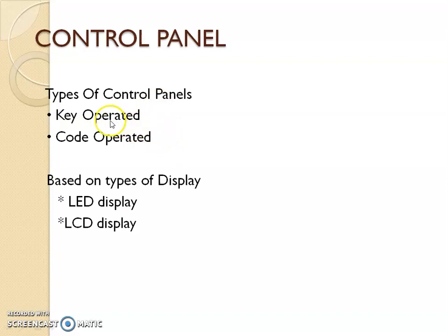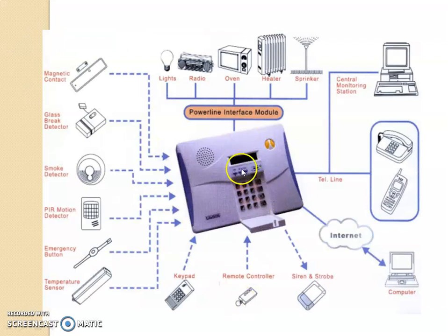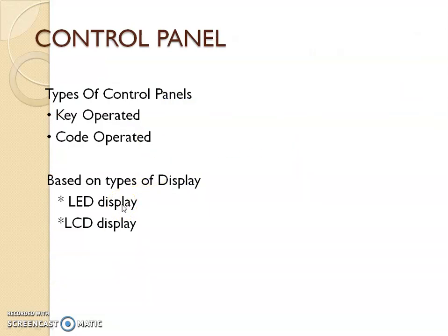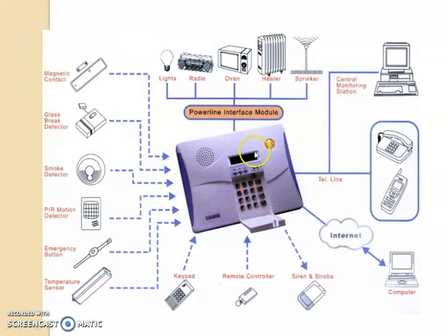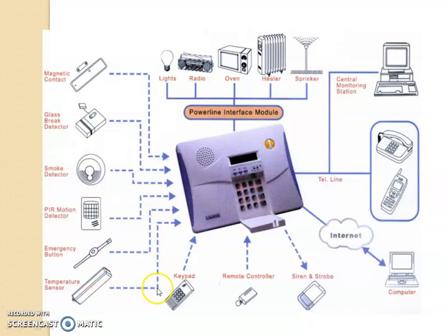There are two types of control panels: key operated and code operated, where you need a key to open it or a password number to enter. You have to type in the code to activate or program the control panel, and the display is sometimes LED and LCD. The control panel is linked to many devices: magnetic contact, glass break detector, smoke detector, PIR, motion detector, emergency buttons, and temperature sensor. These devices sense and detect presence, then send information to the control panel.